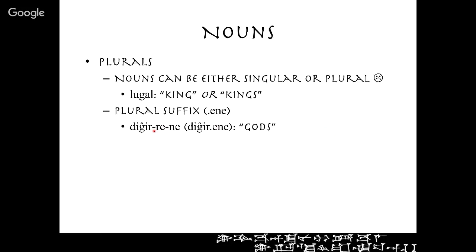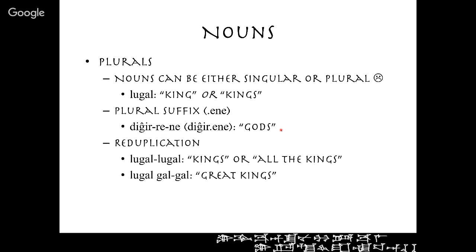The 'r' you see on a word like 'dingir-ene' is called an auslaut — we'll talk about it in a moment. They're putting the ending 'n' on the word dingir, so 'dingir-ene' means gods. They can also show plurality through reduplication of the noun or adjective — just writing it twice. 'Lugal' could mean king or kings, but 'lugal lugal' means kings or all the kings. If they reduplicate the adjective — 'gal' means big — 'lugal-gal' means great king, but 'lugal-gal-gal' means great kings, plural.